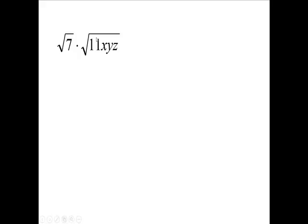Same thing here. The two radicals are written as one. You're going to have 11 times 7, 77 with your X and your Y and your Z under one radical.